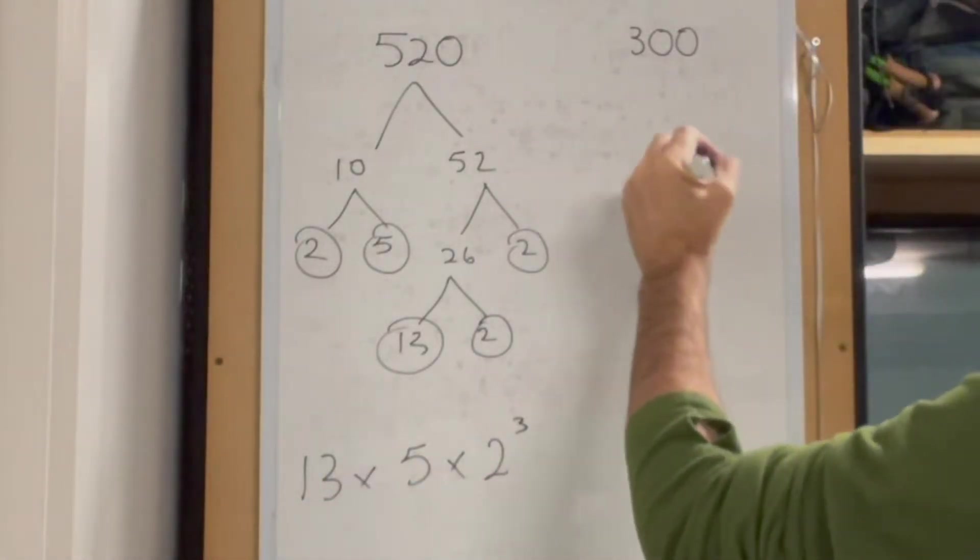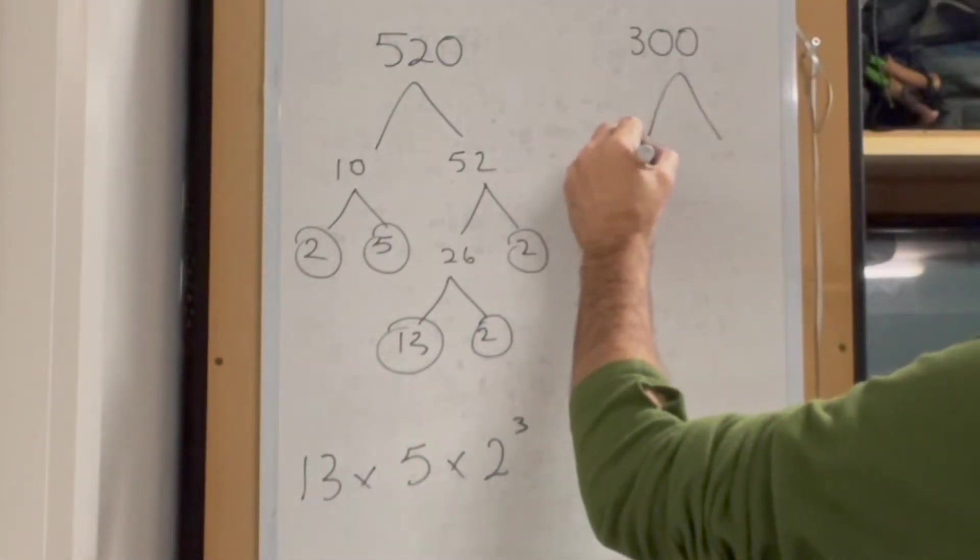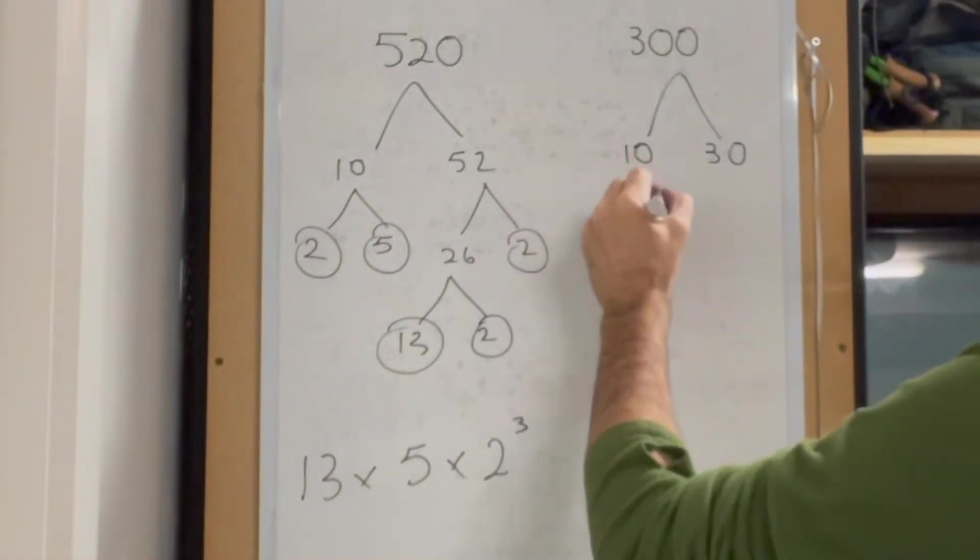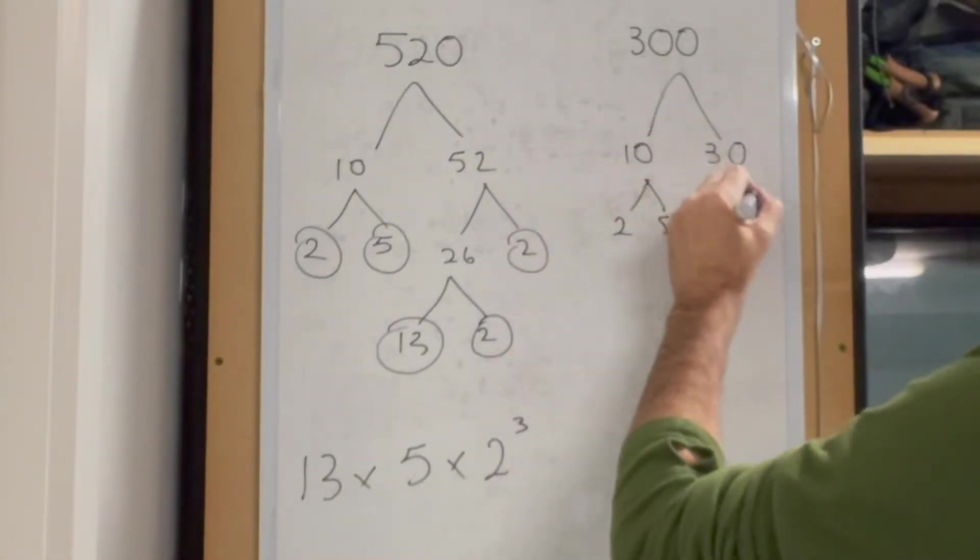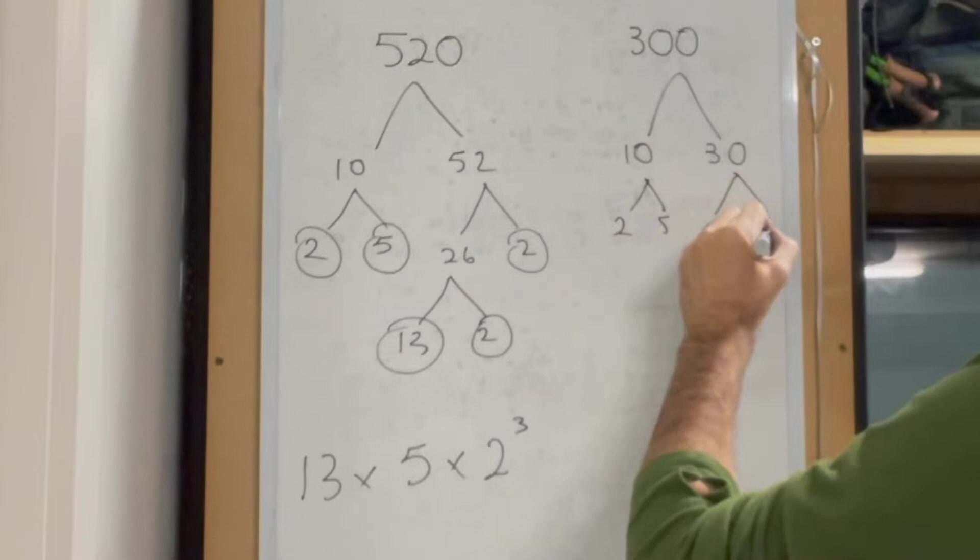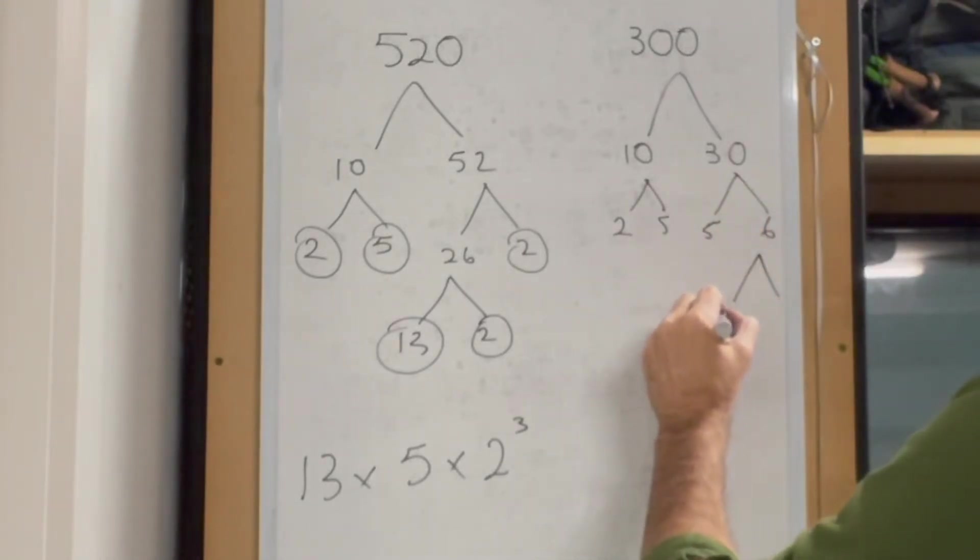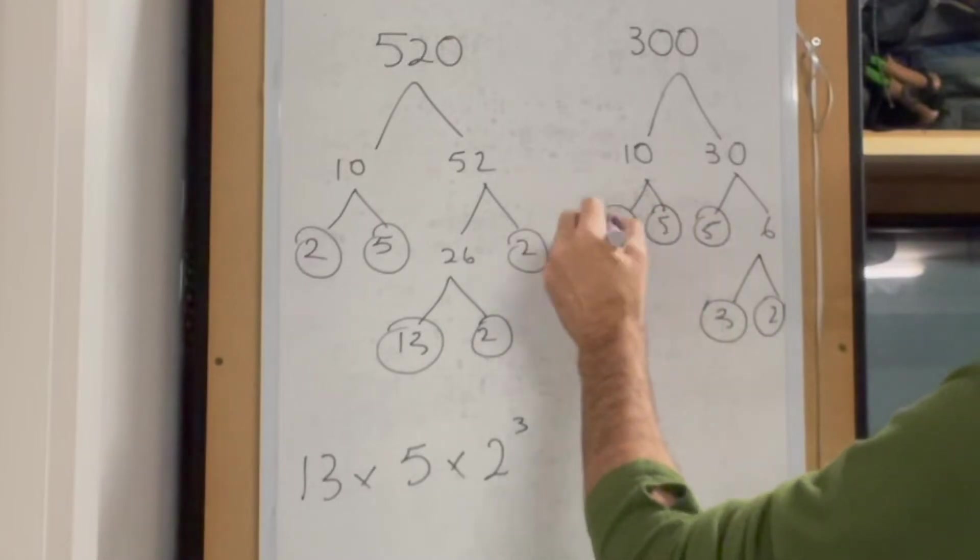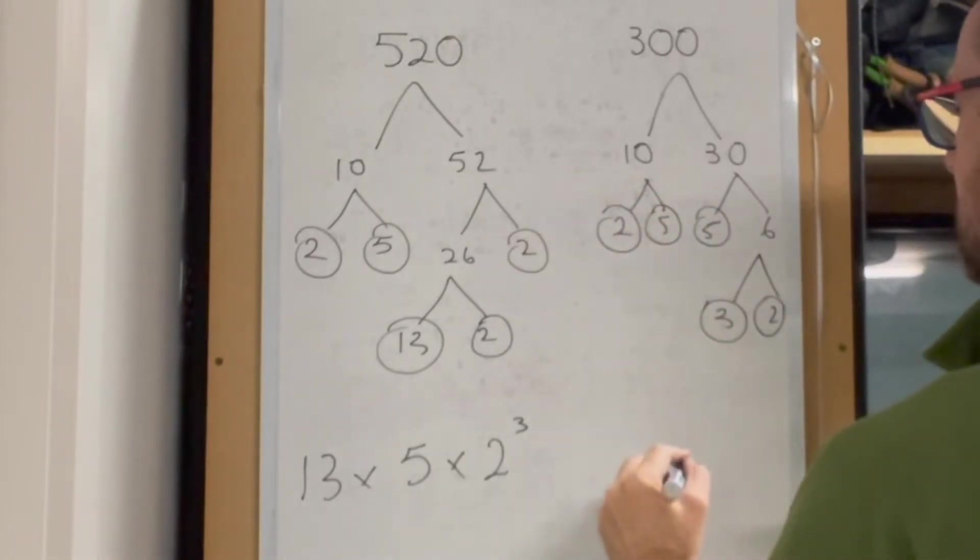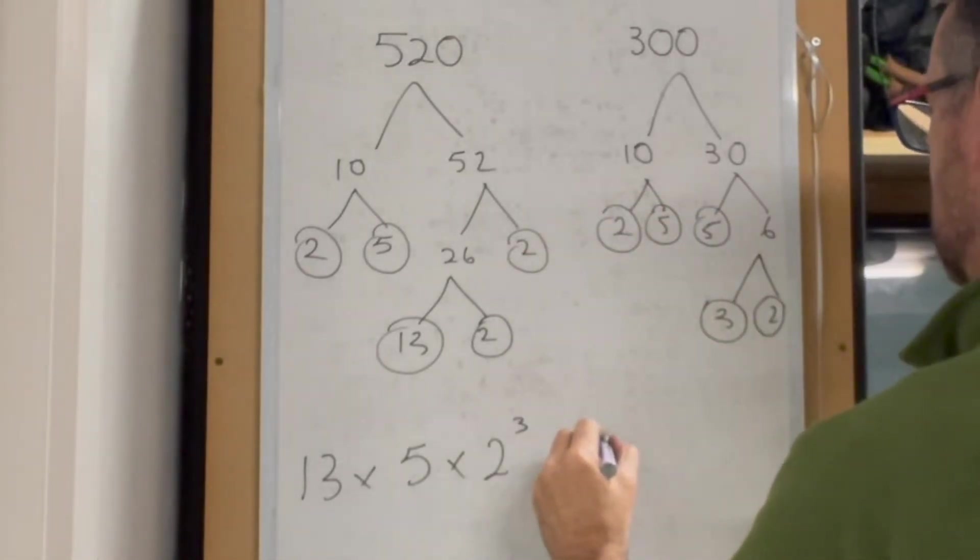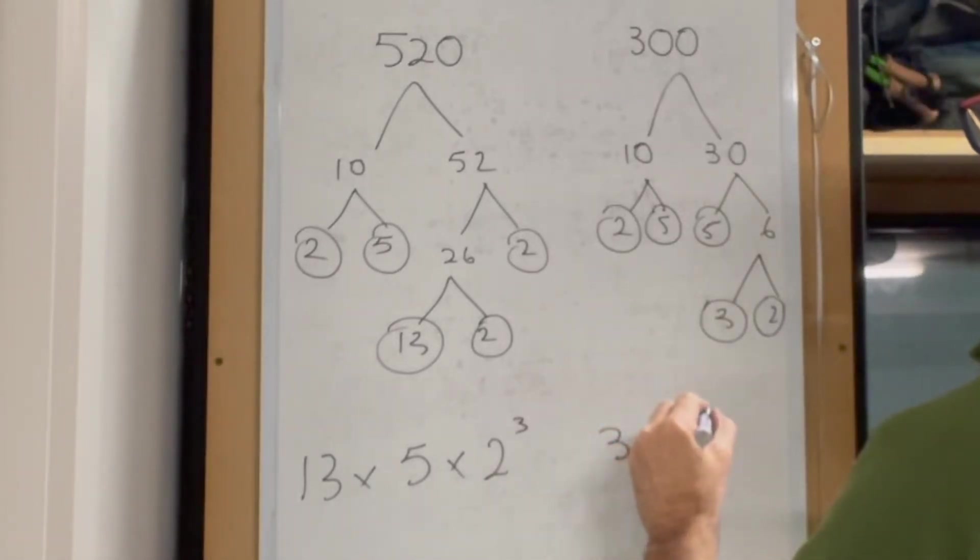For 300, do the same thing: 10 and 30, which gives us 2 and 5 here, and 5 and 6, and 3 and 2. We end up with 2, 3, 5, 5, and 2, giving us 3 multiplied by 5 squared multiplied by 2 squared.